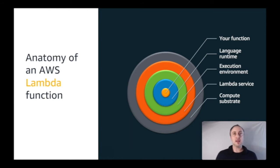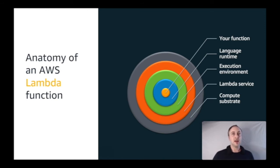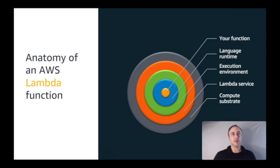Then there's the execution environment — the customer-specific, AWS account-specific layer, and the secure space where your code is run. Inside each execution environment there's the language runtime, and finally there's your function — the code you provide, zipped up as a package with any required dependencies.